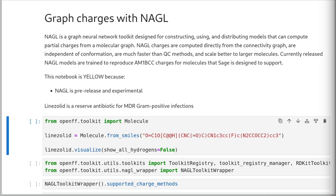At the moment we're training NAGL to reproduce AM1BCC charges, but we're not claiming that NAGL is an AM1BCC method yet — it produces NAGL charges. They're numerically very similar to AM1BCC charges, but we're not yet claiming that they are AM1BCC charges. NAGL is an important feature in the future of OpenFF, because it means instead of waiting minutes every time we want to parameterize a new molecule for charges to be calculated, we can compute them much more quickly. It also means we can fit charges to reproduce properties, rather than having charges be a fixed point that all other properties are fit around. This notebook is yellow — not quite ready for primetime, but if you're careful you can probably use it, because NAGL is pre-release and OpenFF force fields are trained to use AM1BCC charges.